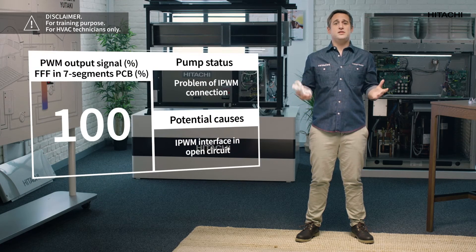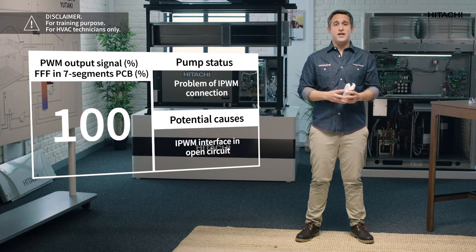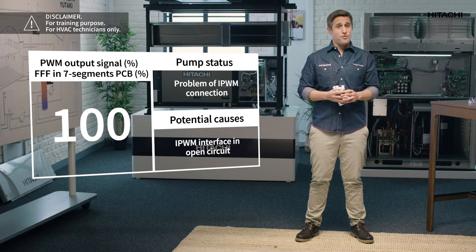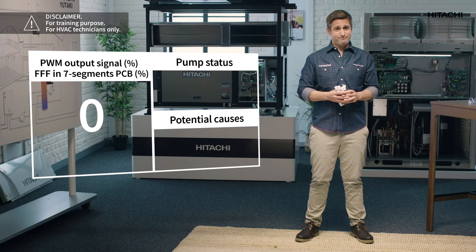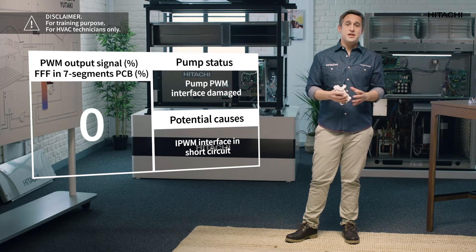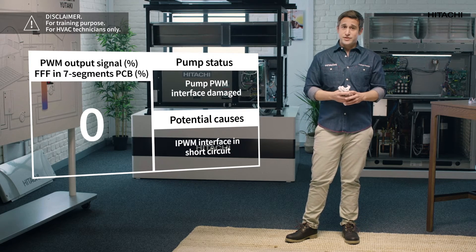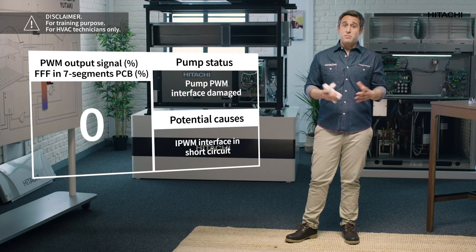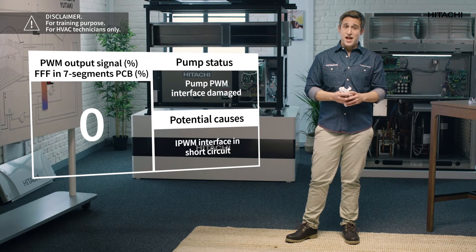A value of 1 is a cause of error, and means that the cable is disconnected — the PCB doesn't receive any signal, and that is why the error appears. A value of 0 is also a cause of error, and means that there is a short circuit — the PCB receives a permanent signal, and that is why the error appears. We may assume that the pump internal circuit is damaged.